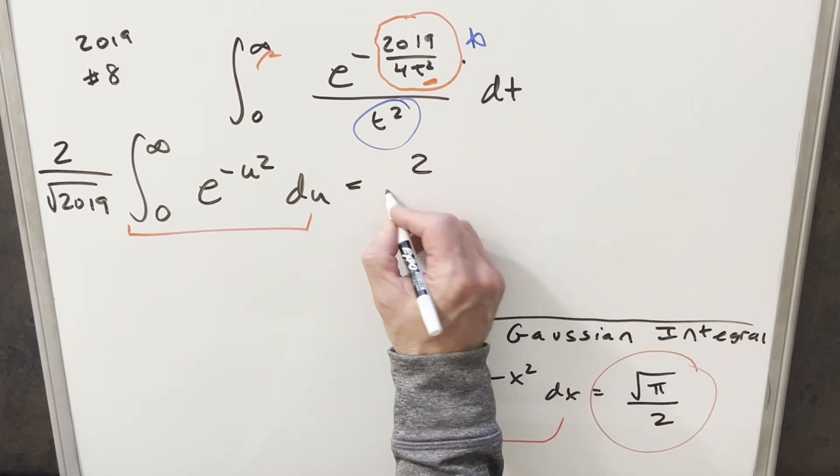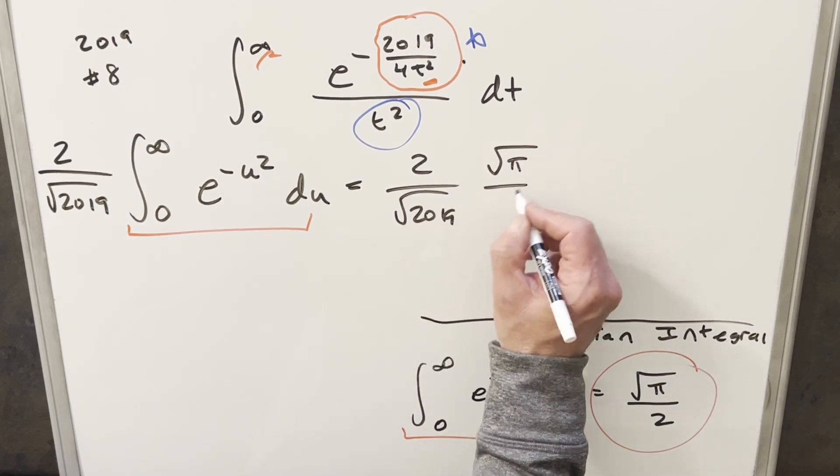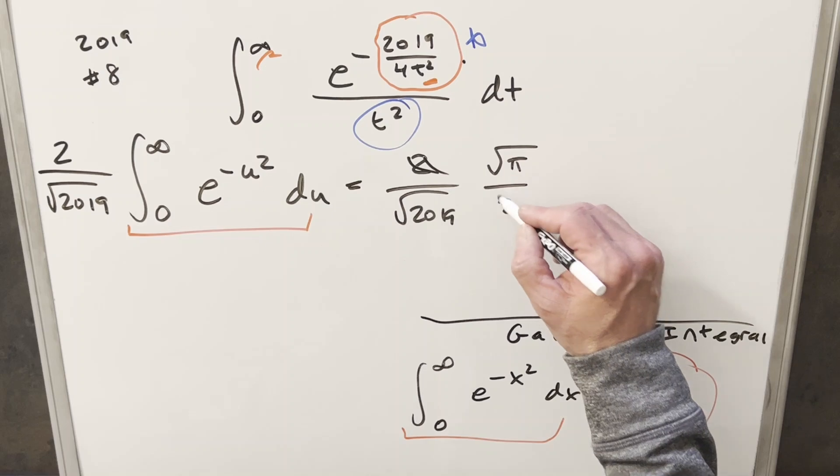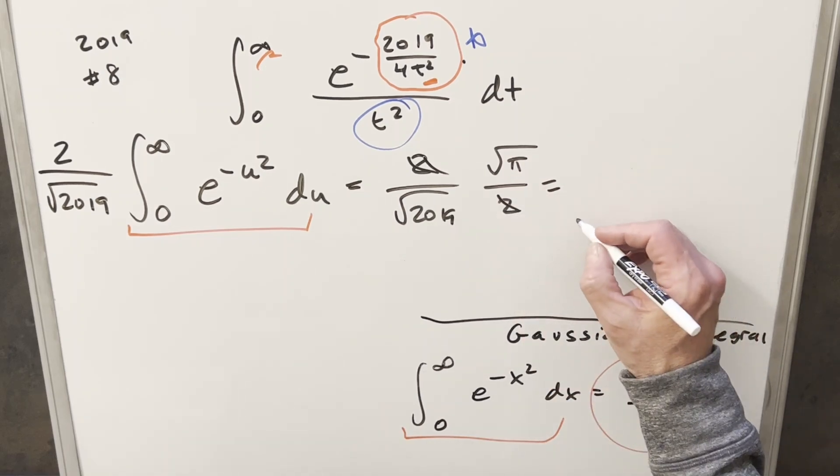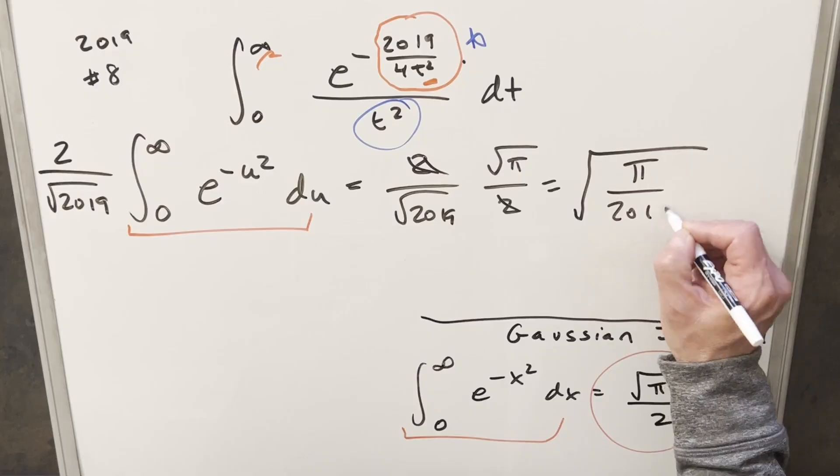So plugging this in, what we're left with is 2 over square root 2019 times square root of pi over 2. Of course, the 2s are going to cancel here and here. And so for my final solution, let's write this all under one radical. Square root of pi over 2019.